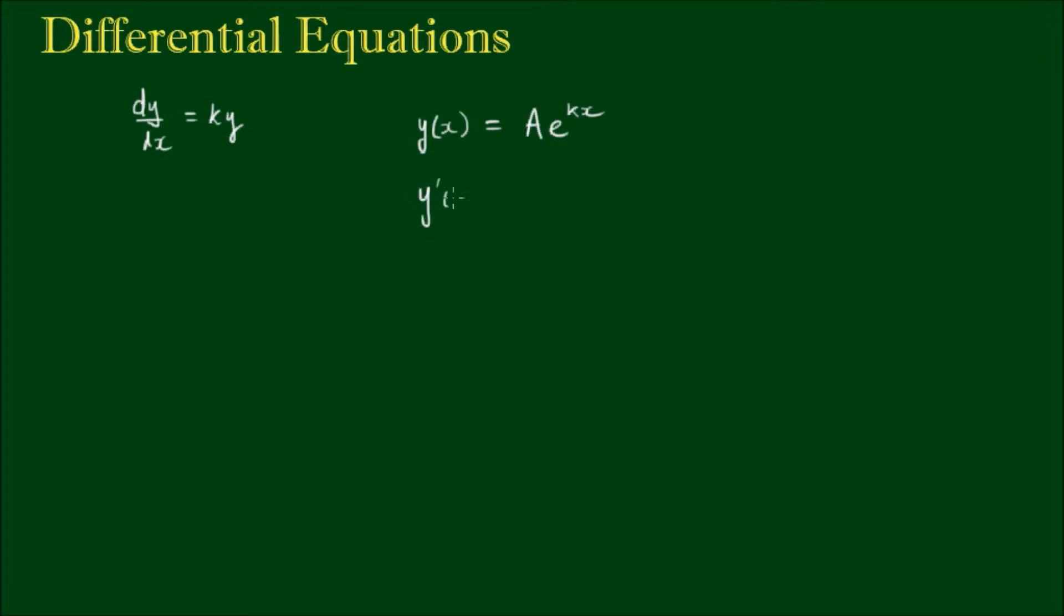If we take the derivative, the constant a remains, the derivative of e to the kx is e to the kx times k. So the derivative dy/dx equals k times this part here, A times e to the kx, which is still equal to y.